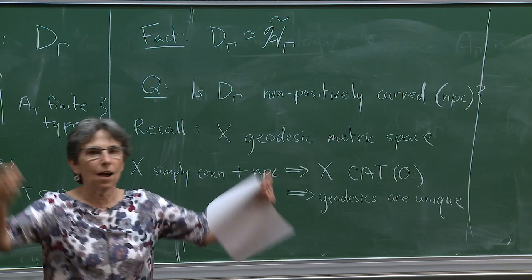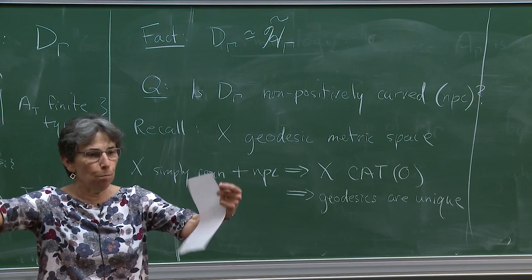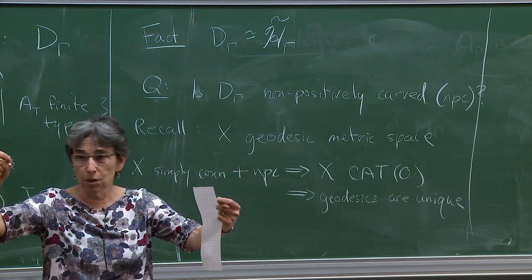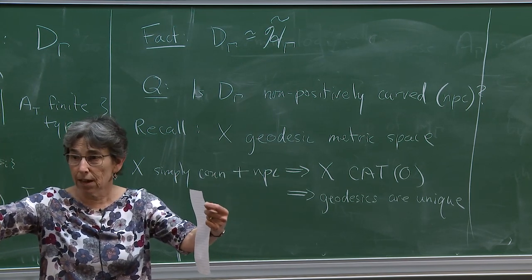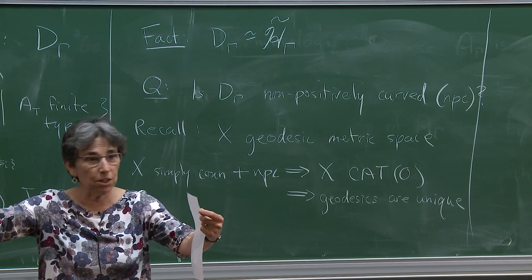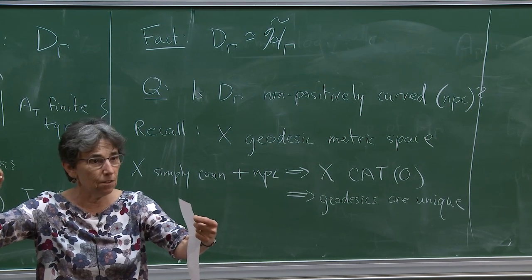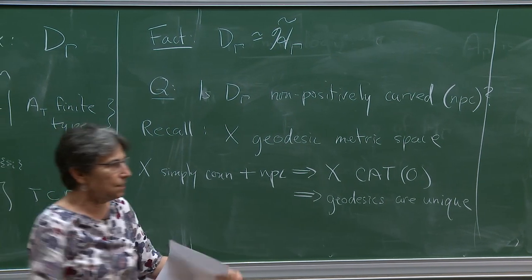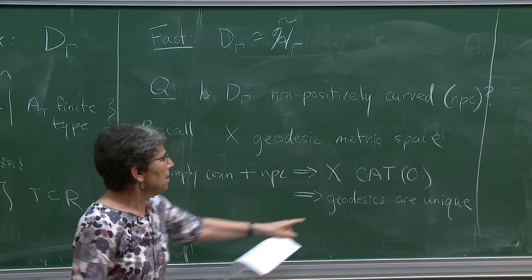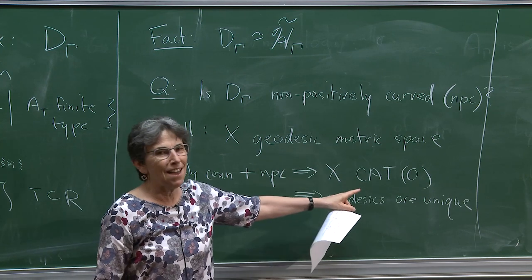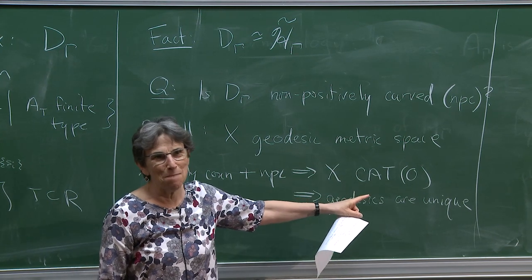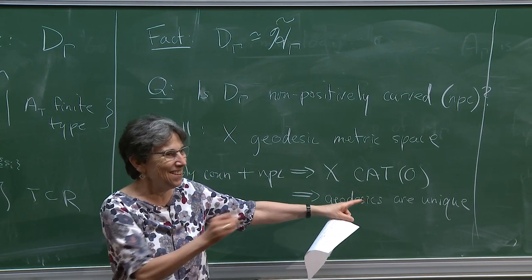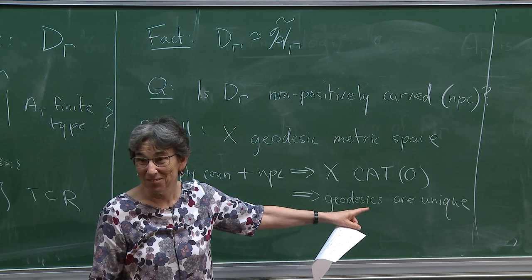What I mean is: given two points in your space, there's one and only one geodesic connecting them. That's what I mean by geodesics are unique. I'm using the CAT(0) metric here, not the taxicab metric.